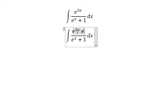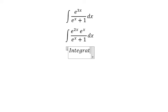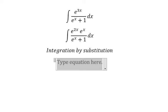We can write the numerator as e to the power of 2x multiply by e to the power of x. Next we need to use integration by substitution. I will put u equals e to the power of x. If I do the first derivative for both sides,